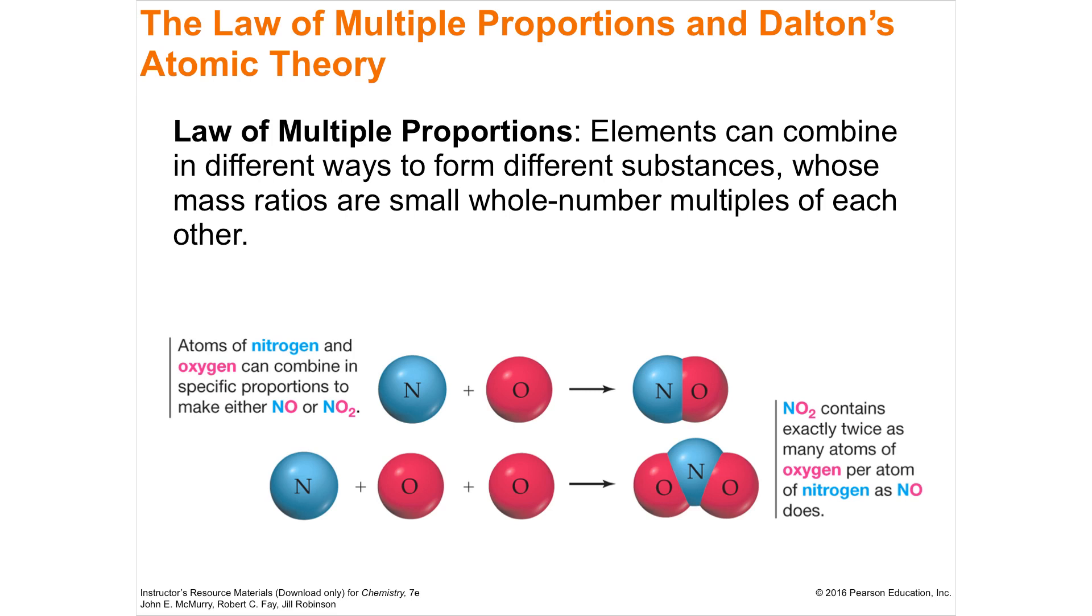So here's the nitrous oxide. N plus O is NO. N plus O2 is NO2. If you look at the weight of the oxygen, it's going to be exactly twice what the first one was. So small ratios, definite multiple proportions.